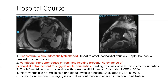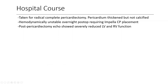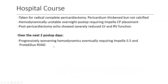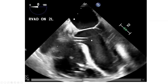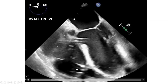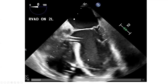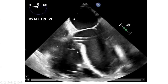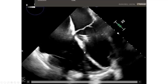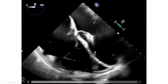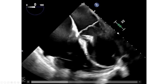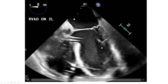The patient was taken for radical complete pericardiectomy. The surgeon found the pericardium was thickened but not calcified. Postoperatively, the patient became hemodynamically unstable. The echo postoperatively showed a severely dilated LV and RV with severely reduced biventricular systolic function, and now abnormal septal motion due to RV volume overload — a different septal motion than before, with the septum moving toward the RV in systole and pushed toward the LV in diastole — paradoxical septal motion of RV volume overload.